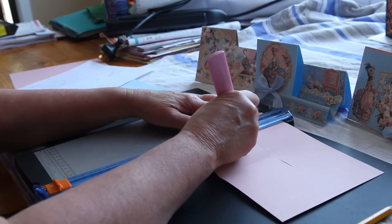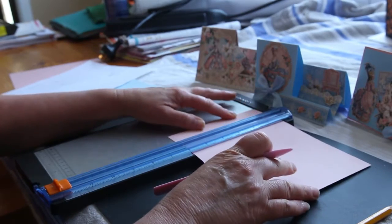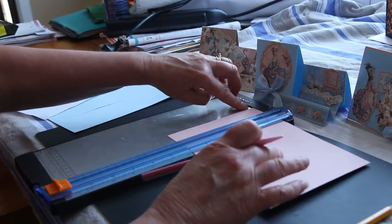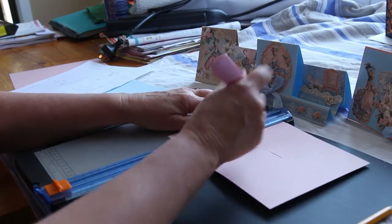And we're going to move our card along to five centimeters on our trimmer and score again, then along to seven and a half centimeters and score, nine centimeters and score.